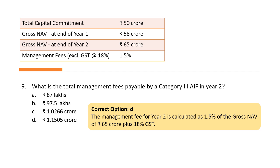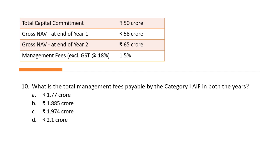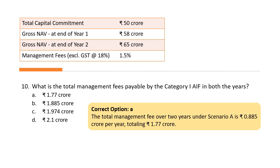The final question: using the same dataset, what is the total management fee payable by Category 1 AIF in both years combined? Since it is Category 1, the gross NAV concept does not apply — total capital commitment is used. The management fee for both years is 88.5 lakhs multiplied by two, totaling 1.77 crore, and the answer is option A.